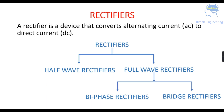A rectifier is a device that converts AC to DC, that is alternating current to direct current. Rectifiers are classified into two types: half-wave rectifiers and full-wave rectifiers. Full-wave rectifiers are of two types: biface rectifiers and bridge rectifiers.